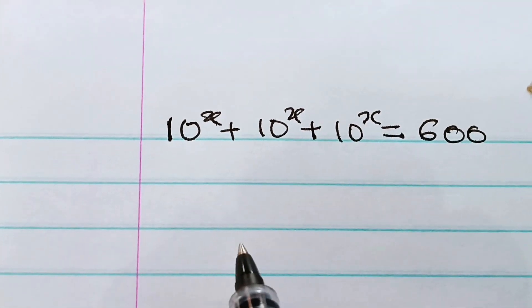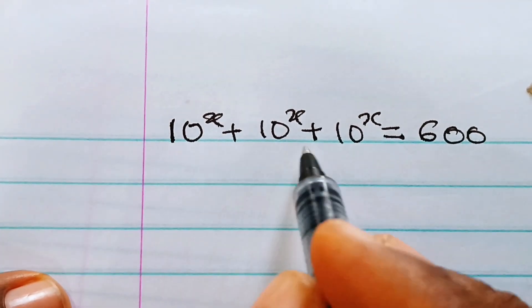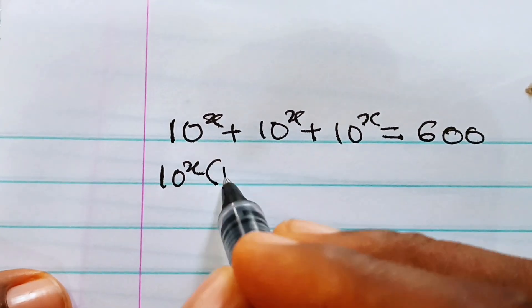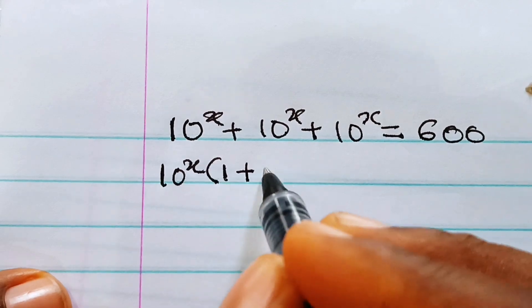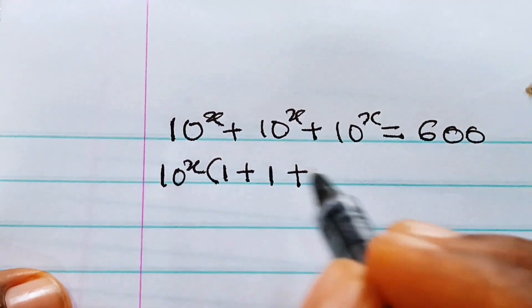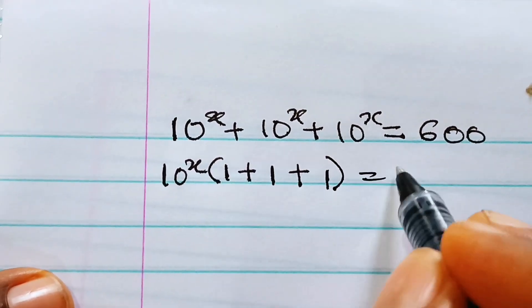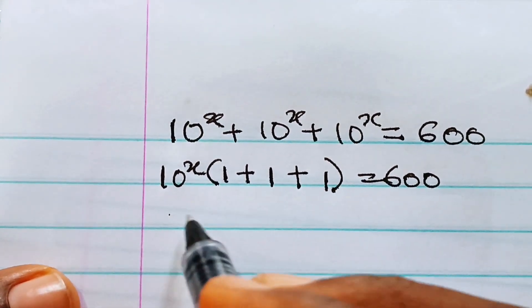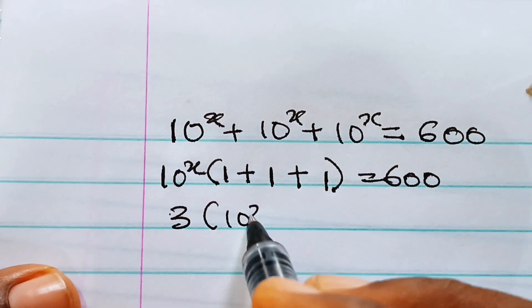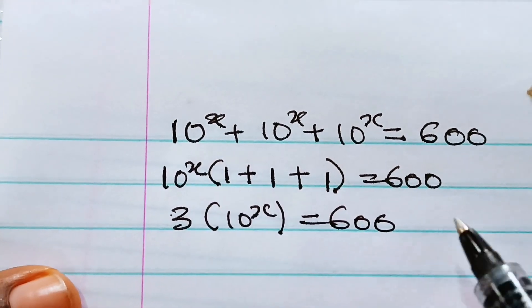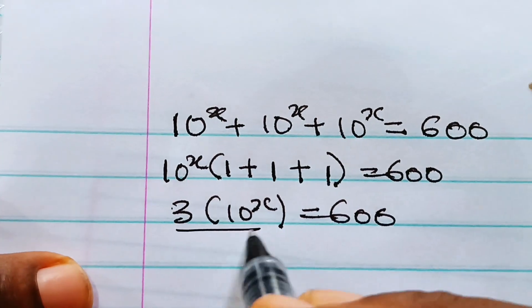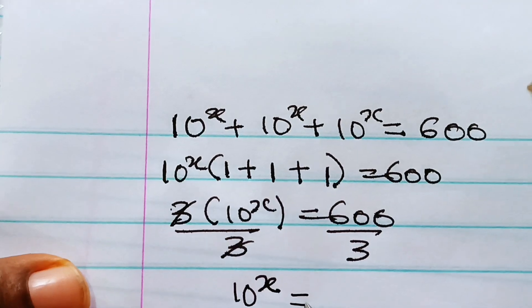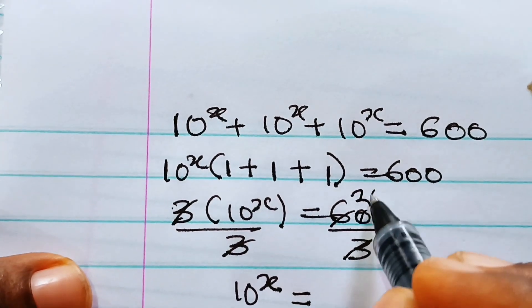Let's solve for the value of x. What they have in common is 10 to the power of x. When this is divided by itself we have one, and again one, and another one, which is equal to 600. So we have one plus one plus one which gives us three. We have three brackets times 10 to the power of x is equal to 600. Now let's divide through by three.